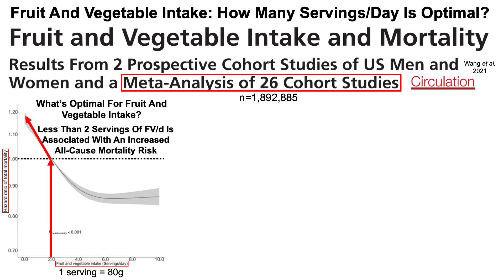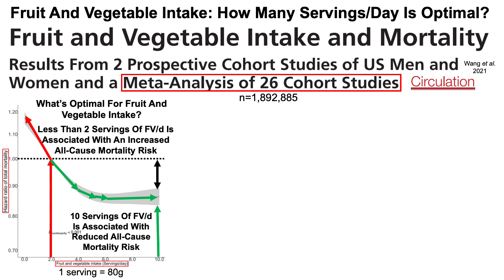Less than two servings of fruits and vegetables per day is associated with a significantly increased all-cause mortality risk. As servings increase past two per day, all-cause mortality risk is significantly reduced, all the way up to intakes of 10 servings of fruits and vegetables per day. So what's driving this association — is it fruit, vegetables, or a combination of both?